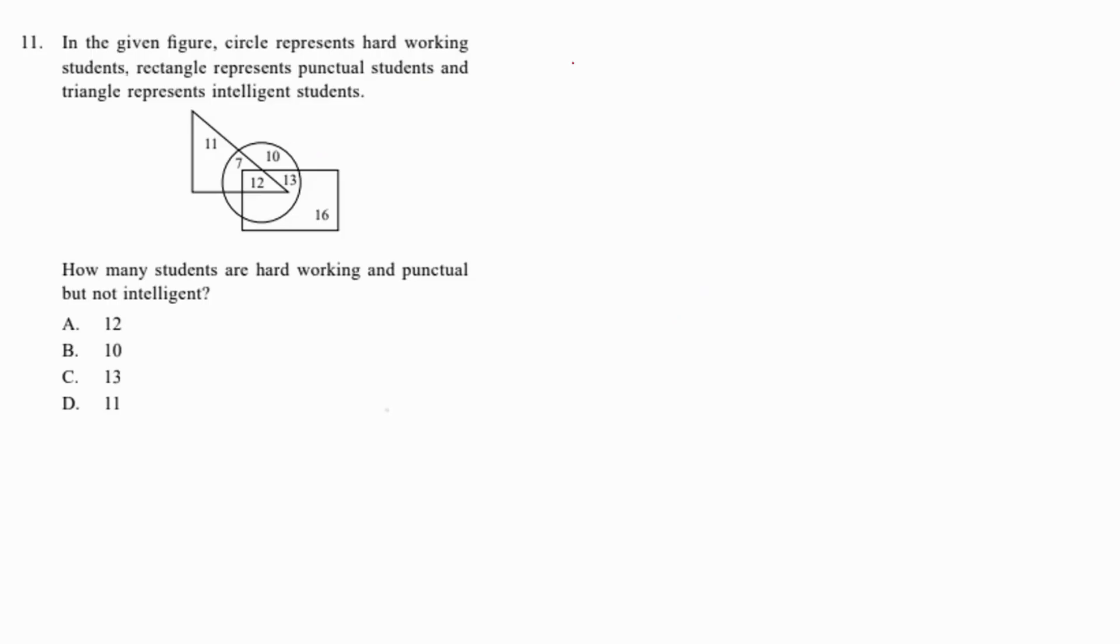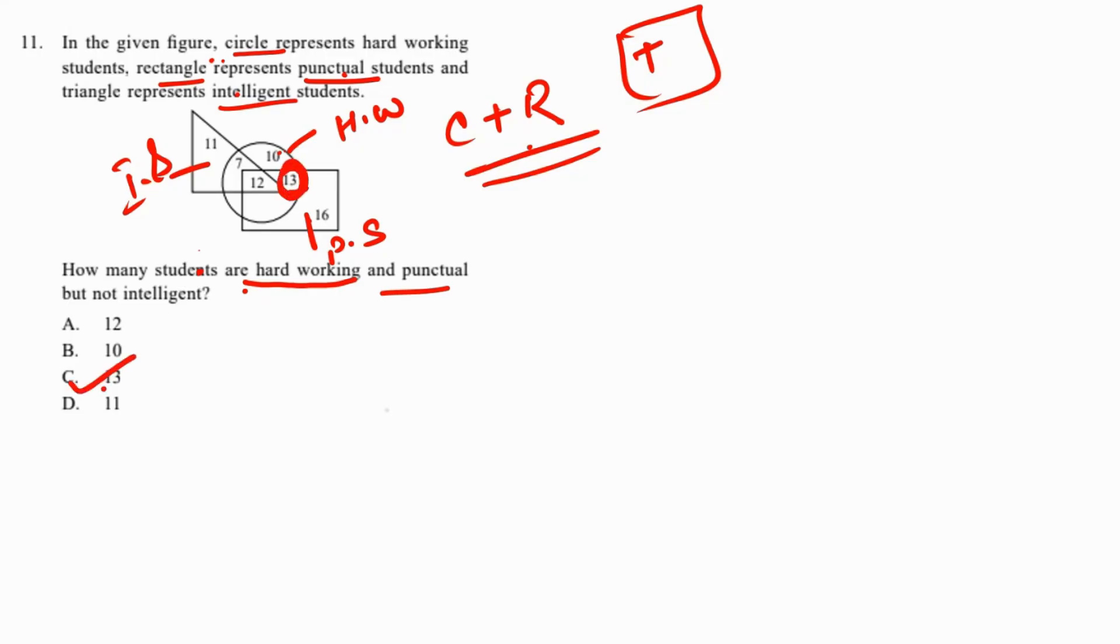A Venn diagram question where the circle represents hardworking students, the rectangle represents punctual students, and the triangle represents intelligent students. The question asks for hardworking and punctual but not intelligent. That means circle plus rectangle but triangle should not overlap. Only the number 13 satisfies this. That's the answer.